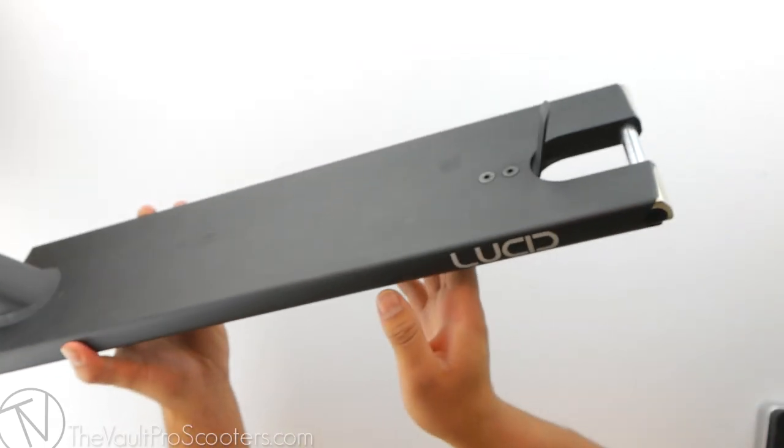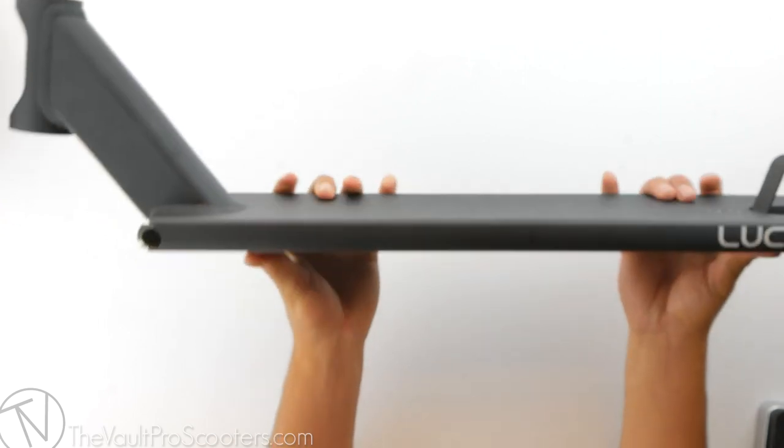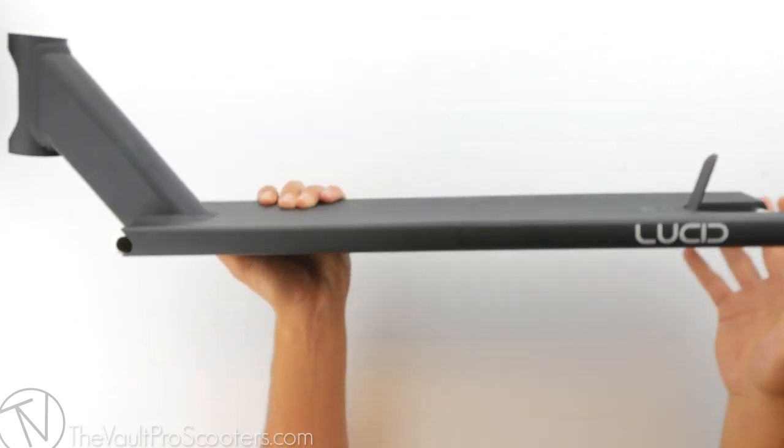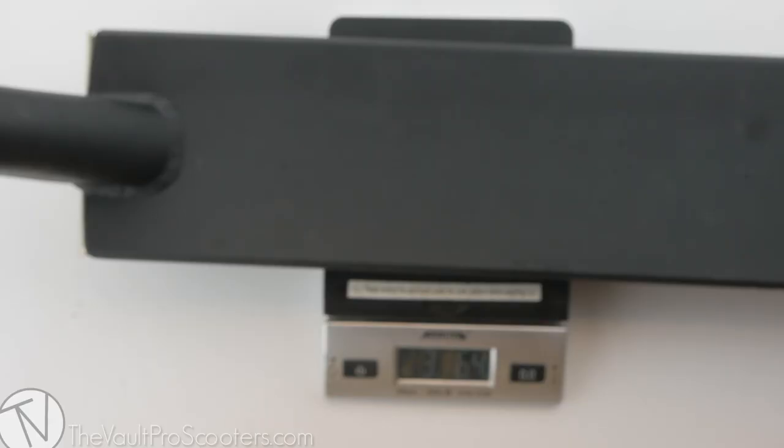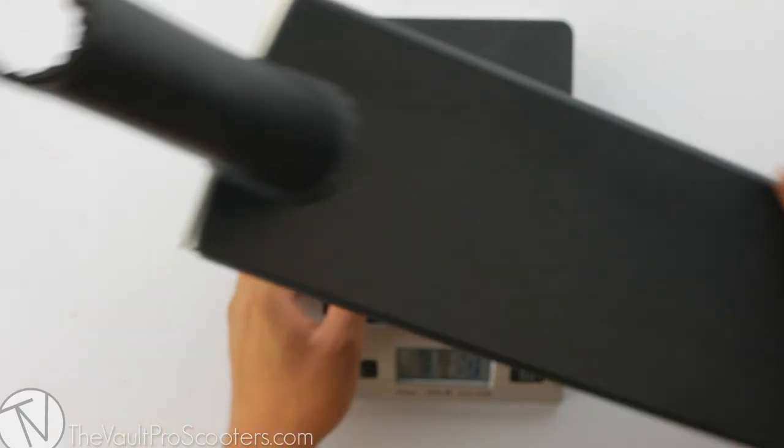Since both front and back dropouts are the same on the Lucid deck, it allows it to be really thin. Let's see where it stands on the scale. Alright, so it comes in at 3 pounds, 6.4 ounces.